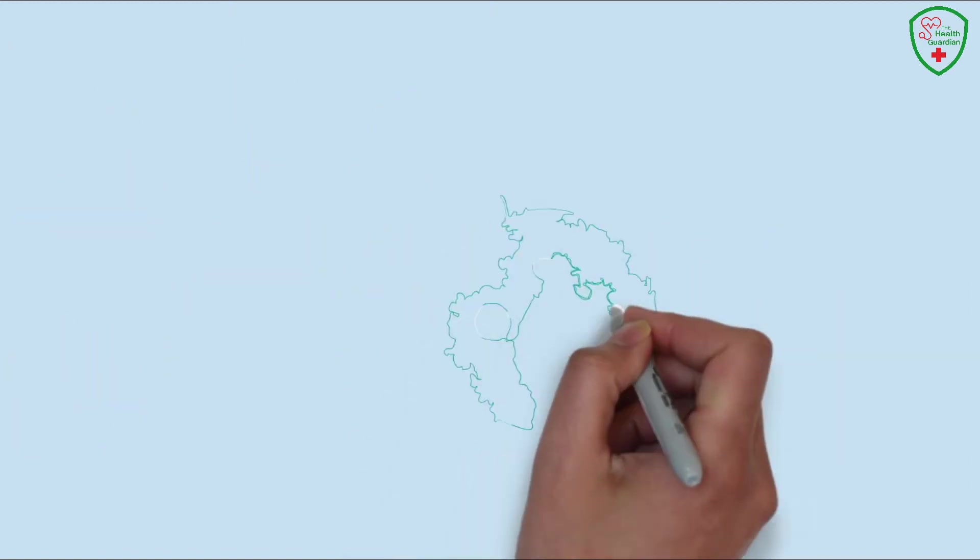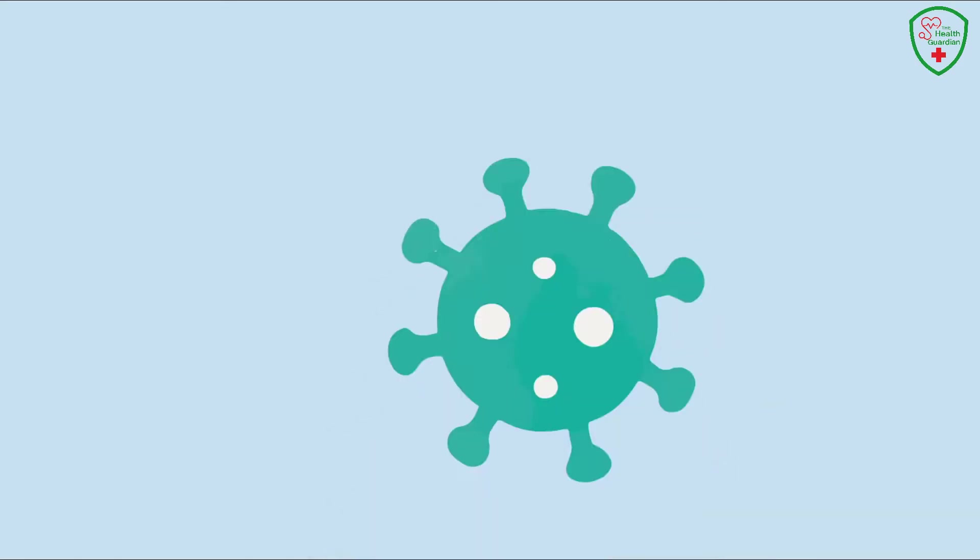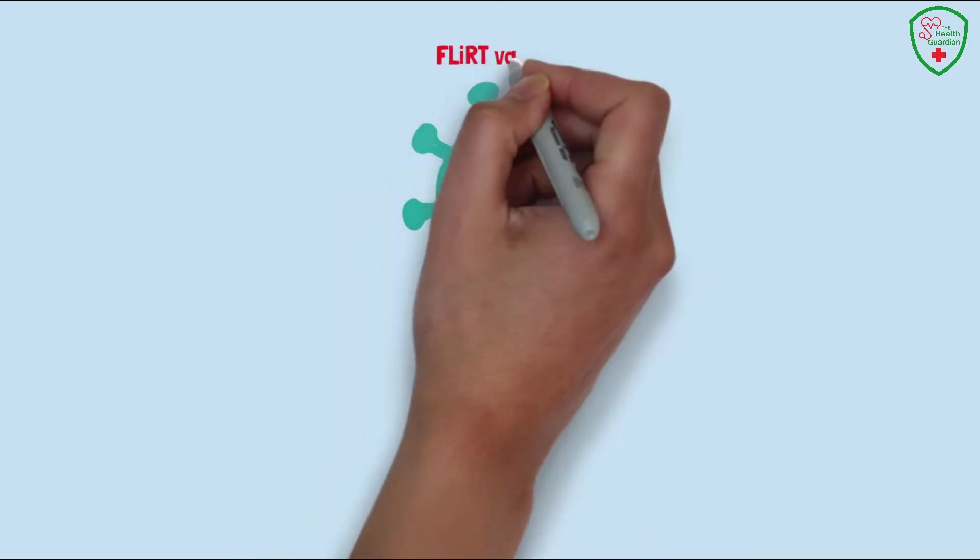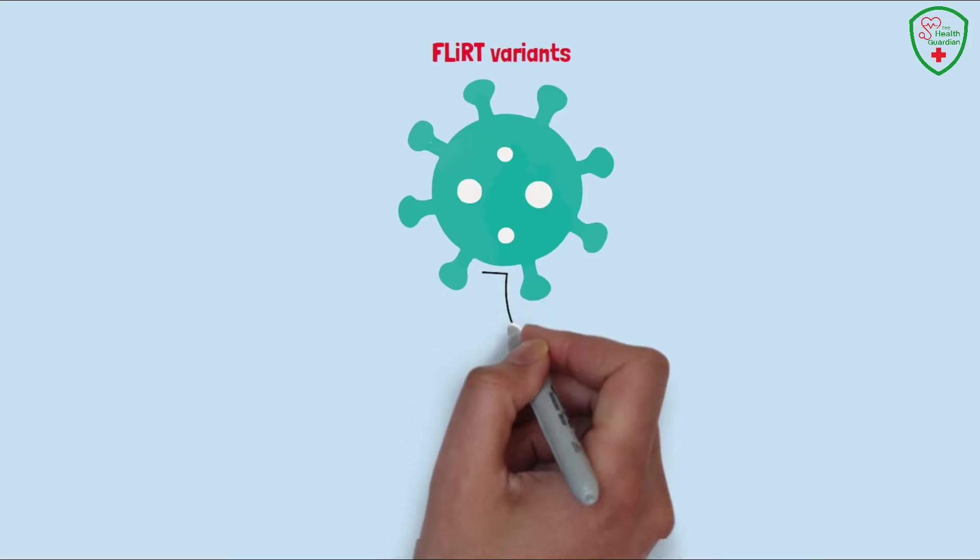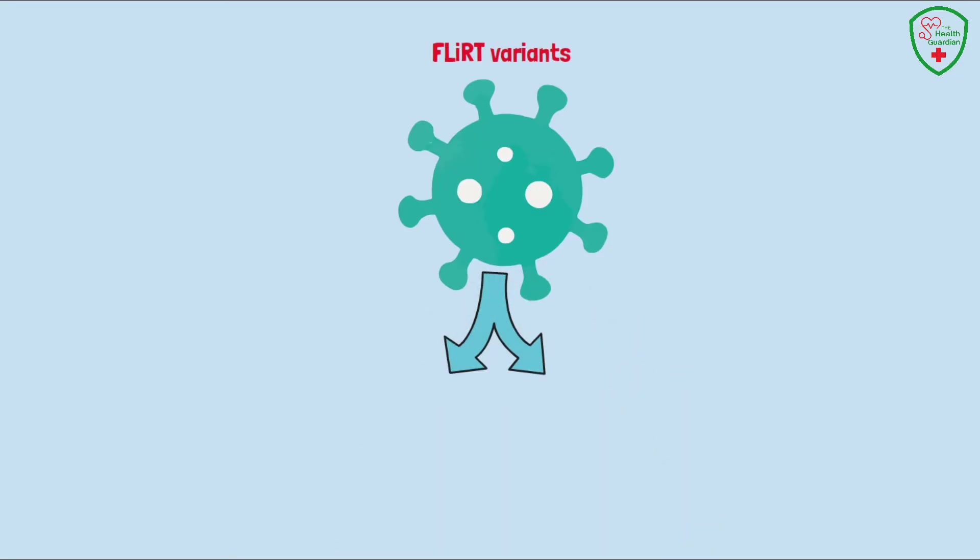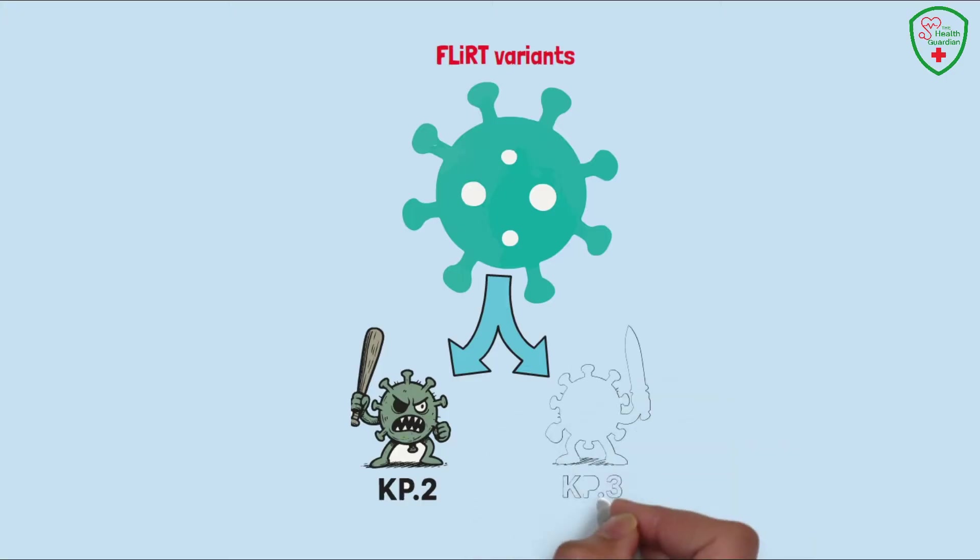Let's start with a big update that's been making headlines as of late May 2025. The emergence of the FLIRT variants, specifically KP.2 and KP.3. These are the newest kids on the block, descendants of the Omicron lineage, and they've been popping up across the globe since early this year. Named for specific mutations in their spike protein, F and L for certain amino acid changes, and IRT for additional tweaks, these variants are more contagious than some of their predecessors.